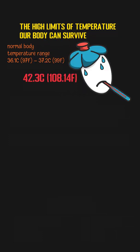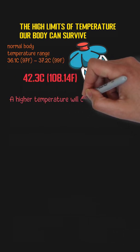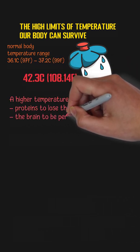The highest body temperature a human can survive is 42.3 degrees Celsius. A higher body temperature than this limit will cause proteins to lose their natural structure and cause the brain to be permanently damaged.